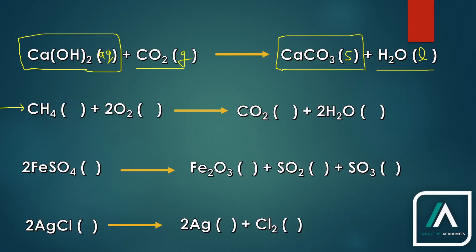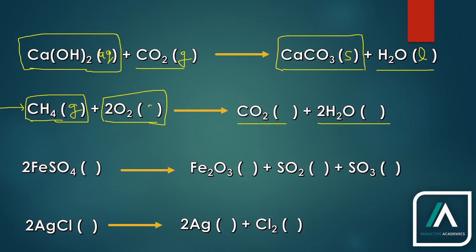Moving on to the next reaction: methane — we burn this in the presence of oxygen and we get carbon dioxide and water. CH4 is natural gas, so it will be in the form of gas. Oxygen is also gaseous. Carbon dioxide is also going to be gaseous. And this water — as a general rule, since this is a combustion reaction, the water produced will be in the form of steam, i.e. gas, not liquid.